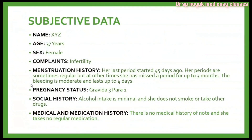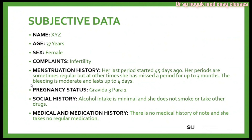Our patient is a 37-year-old female who had complaints of infertility. Her last period started 45 days ago. Her periods are sometimes regular, but at other times she had missed a period for up to 3 months. The bleeding is moderate and lasts up to 4 days.